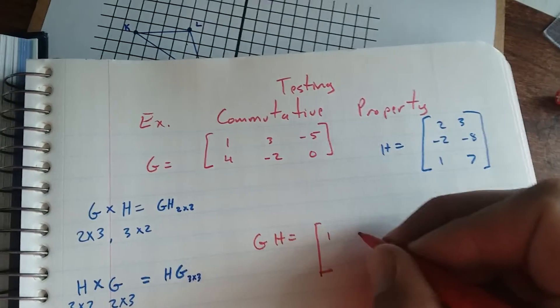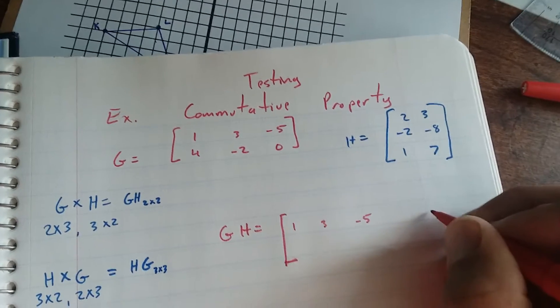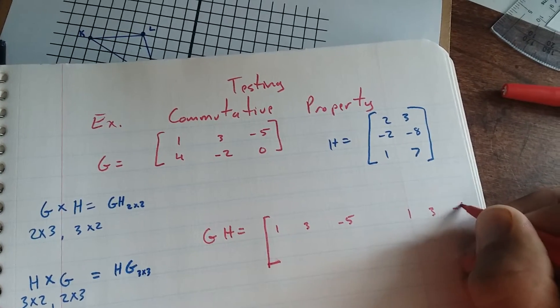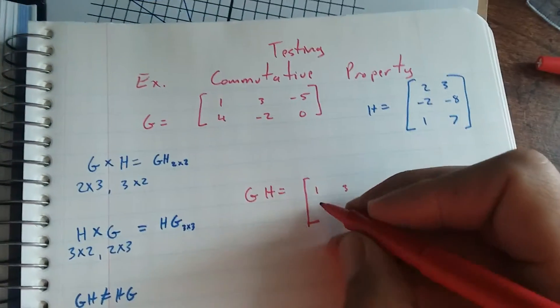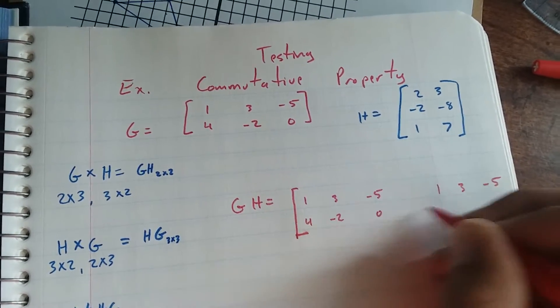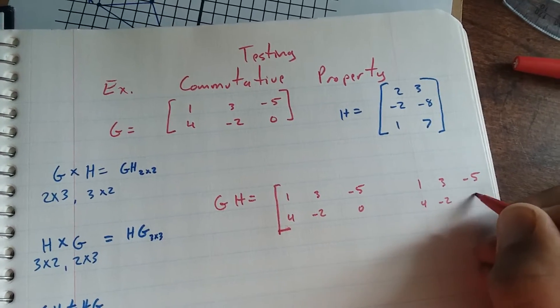So I do 1, 3, negative 5, 1, 3, negative 5, 1, 3, negative 5. And my second row is 4, negative 2, 0, 4, negative 2, 0.